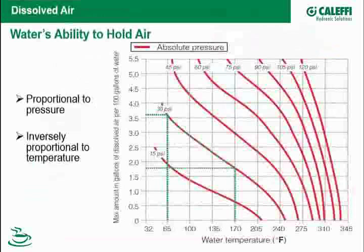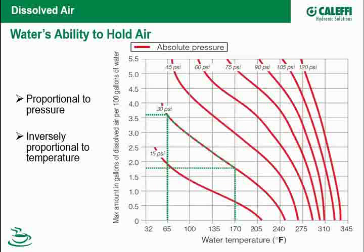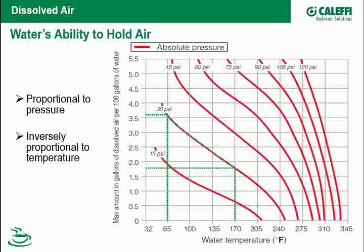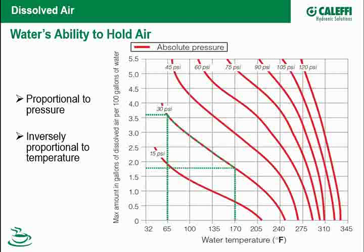Here's another great chart out of Hydronics 15. It looks at the relationship between solubility, pressure, and temperature. The scale on the right is maximum solubility in gallons of dissolved air per 100 gallons of water; across the bottom is temperature; and the red curves are all based on pressure. When I look at pressure: the higher the pressure, the more air I can hold in solution. When I look at temperature: it's inverse — the higher the temperature, the less air I can hold in solution.